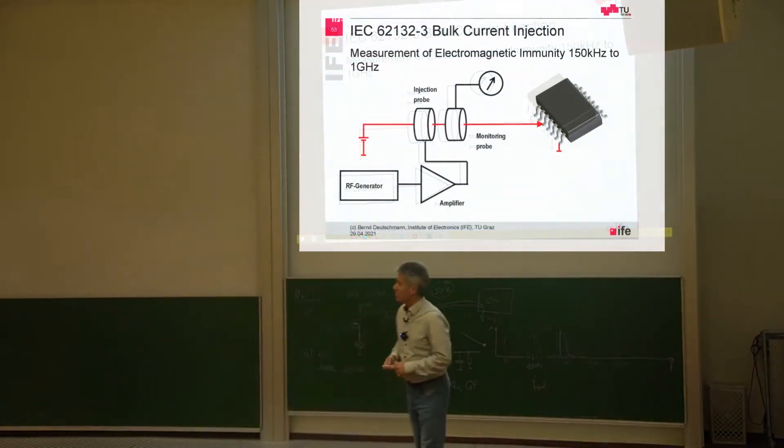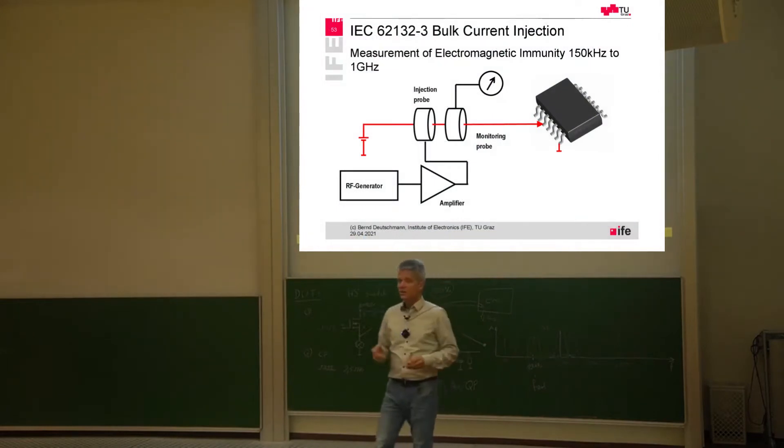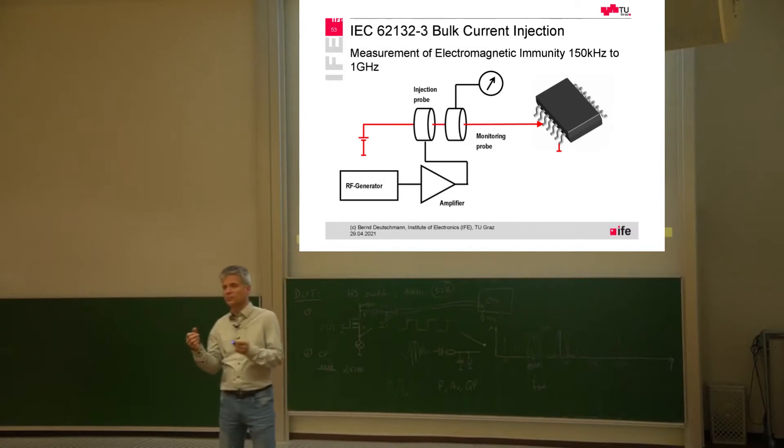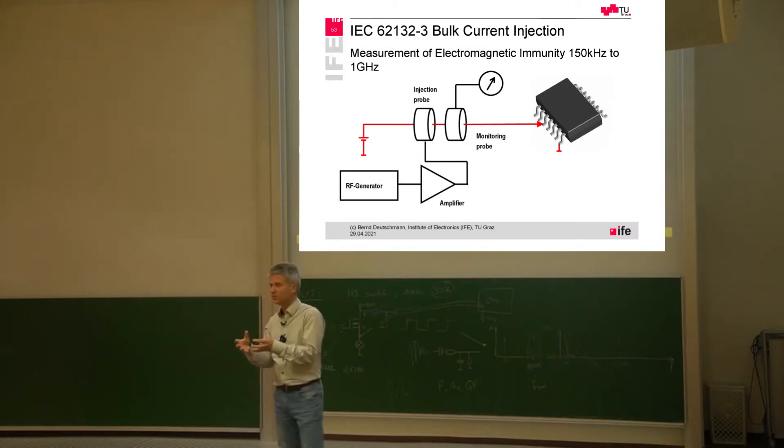So bulk current injection. The basic idea is that we are using a kind of transformer in form of a coupling clamp, inductive coupling clamp, that is clamped around the cable harness or around a printed circuit board trace that is connected to the IC.